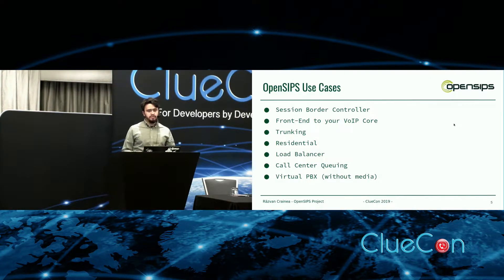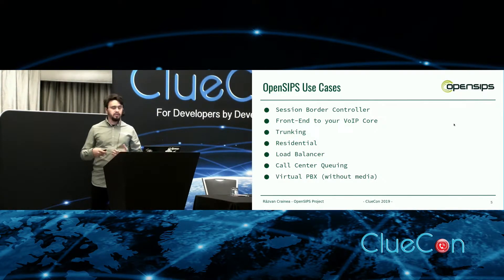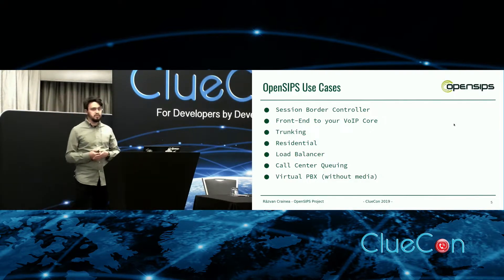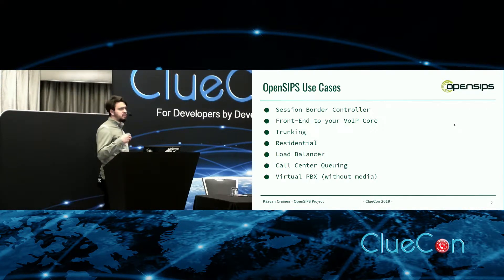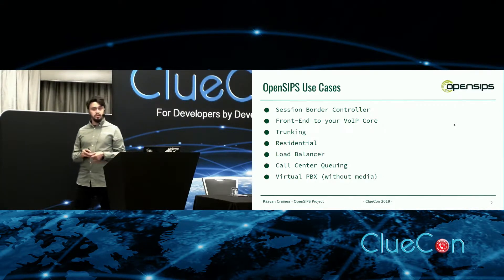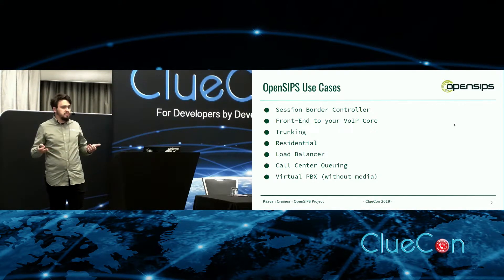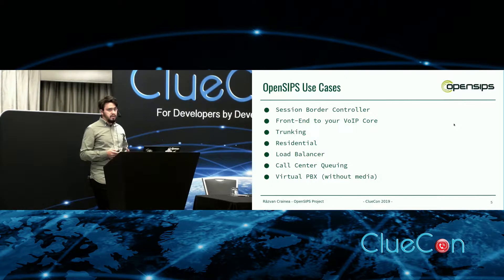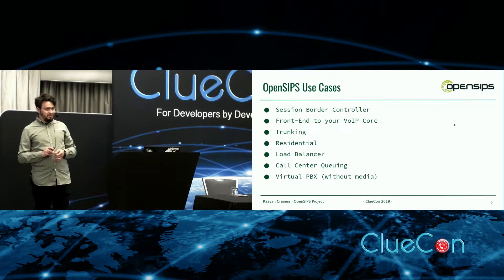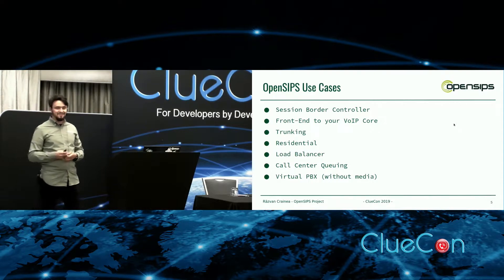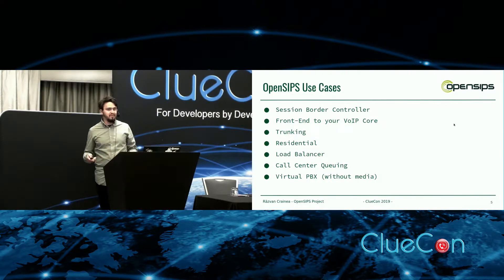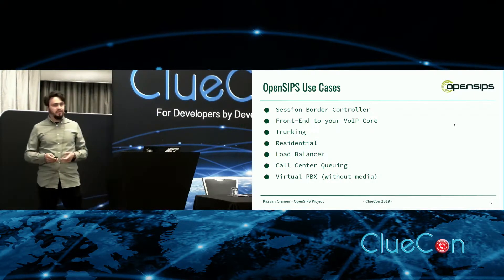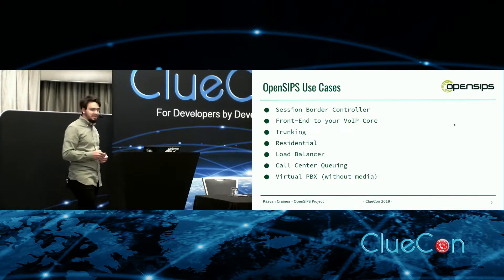Common use cases for OpenSips: you may use it as an SBC, in front of your FreeSwitch servers or media servers as a front-end and entry point to your platform. You can use it for trunking, residential setups, call-center queuing, or virtual PBXs. For virtual PBXs you won't be able to do media, but there are other projects such as FreeSwitch that can handle that for us. So you can easily build a virtual PBX with OpenSips.